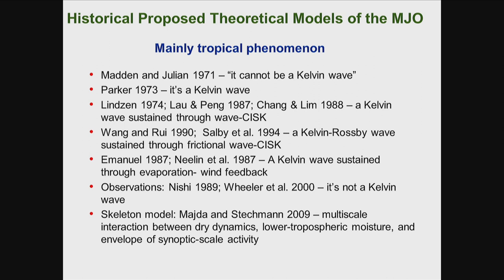Emanuel and Lindzen looked at another mechanism. They say it's a Kelvin wave sustained through evaporation and wind feedback, which is a little bit different from the wave-CISK mechanism. From observation, Wheeler-Kiladis and Nishi looked at the spectrum and found the peak is distinctively different from the Kelvin wave. So they say it's not a Kelvin wave. There's a lot of uncertainty in the explanation of MJO phenomena in the tropics — what is the minimum mechanism responsible to produce the MJO?